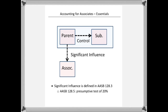AASB 128 goes on to talk about a presumptive test of 20% ownership. And again, like with anything in the accounting standards, it's not a bright line rule. So 20% or higher on its own may be suggestive that the parent has significant influence over that particular company, but you need to look at other factors — board composition, executives, and a variety of other things that may come into play.